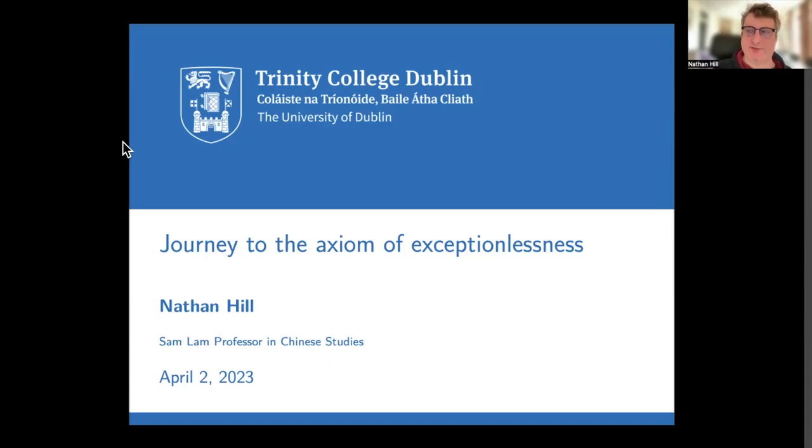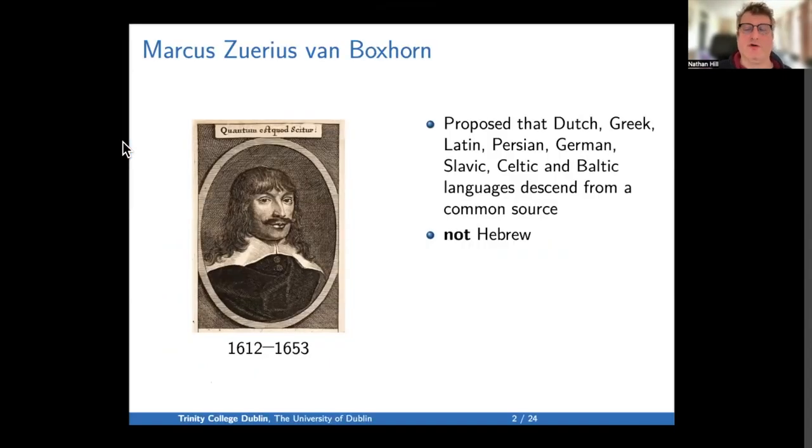The journey to the axiom of exceptionlessness. There's a certain arbitrariness in choosing where to start any story. So I am starting with Marcus Zuerius von Boxhorn, who lived from 1619 to 1653, and he's at least as reasonable a starting point as anyone.